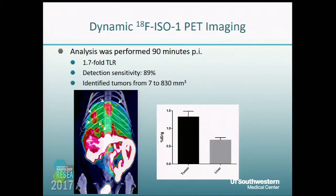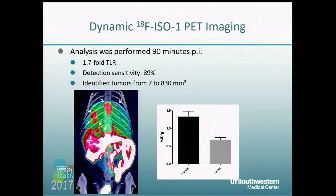I did more extensive work with F18-ISO1 because I was particularly interested in studying proliferation. It had a moderate tumor-to-liver ratio of 1.7 but also a sensitivity of 89%, which matches FDG. Based on those results, we think it's specific for poorly and moderately differentiated tumors. Notably, very small tumors were detected — all the way down to 7 millimeters cubed — demonstrating good sensitivity for detecting small tumors.